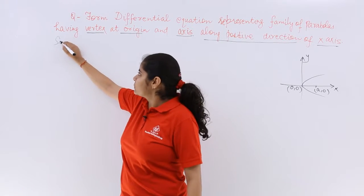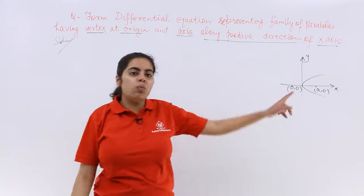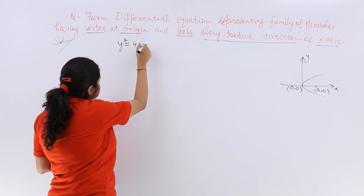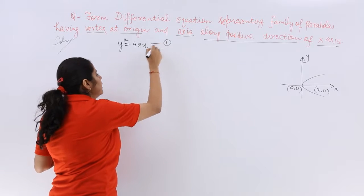I write solution. This parabola is like y² = 4ax. Let's name this as equation number 1.